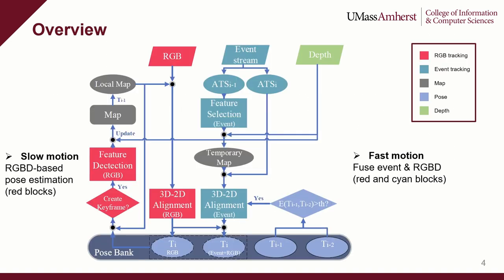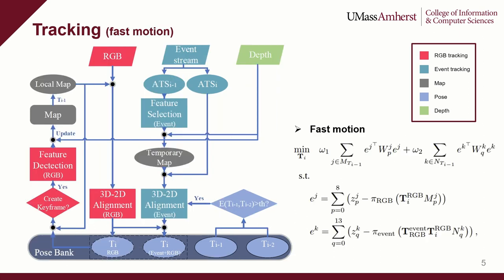Here is an overview of the architecture. During slow motion, the system utilizes RGBD data to construct a global map for tracking. In fast motion, a temporary map is created based on event data, which is then combined with RGBD data to produce a more accurate and robust state estimation. High-speed tracking is achieved by minimizing a cost function that fuses event and RGBD data, while slow motion only relies on RGBD data.